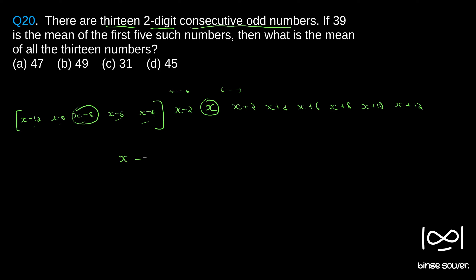It is given that x−8 equals 39, so x equals 47. The question asks for the mean of all 13 numbers. Since we constructed the sequence with x as the middle number, the mean of all 13 numbers is x itself, which is 47. No summation or division needed — the answer to Question 20 is 47.